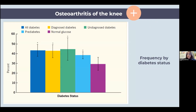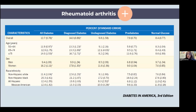Other sites can also be affected with diabetes. Osteoarthritis of the knee — a degenerative condition of the cartilage, distinct from inflammatory rheumatoid arthritis — is significantly more common in people with any kind of diabetes than in people with normal glucose, as shown on this picture. So there is a clear association.